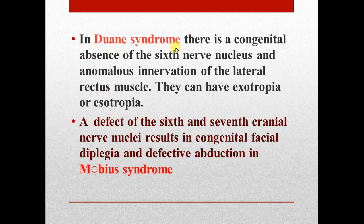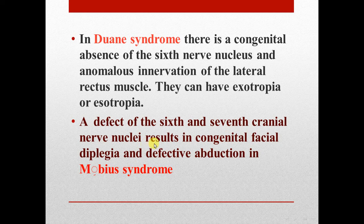In Duane syndrome, there is a congenital absence of the sixth cranial nucleus and anomalous innervation of the lateral rectus muscle; patients can have exotropia or esotropia. A defect of the sixth and seventh cranial nerve nuclei results in congenital facial diplegia and defective abduction in Möbius syndrome.